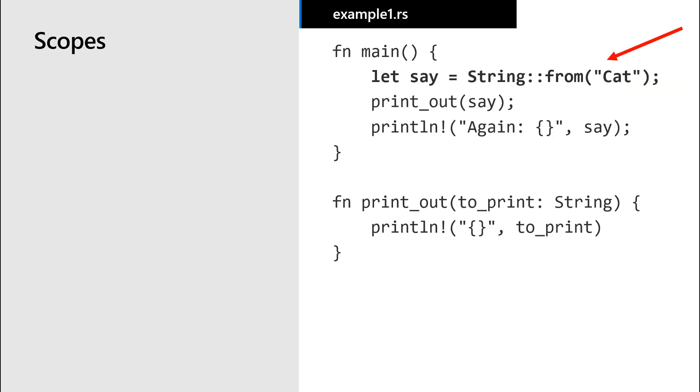Ownership and scopes are especially important to keep in mind when we are passing values between Rust functions. Let's consider this code, which creates the say variable in our main function, and the value of that variable is a string.